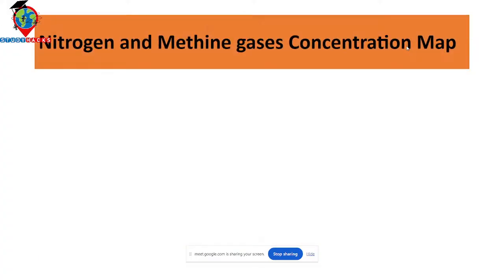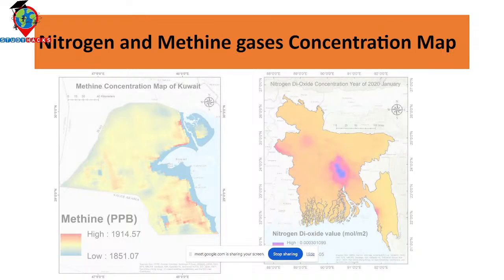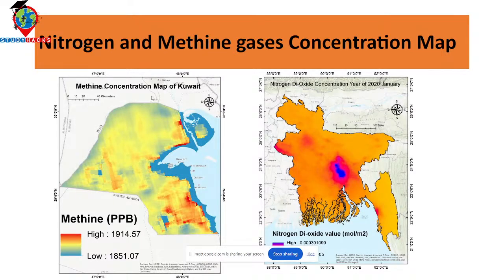Here you can see a concentration map — a nitrogen dioxide and methane gas concentration map. This is the methane concentration map. This dataset was extracted from Sentinel-5 satellite imagery, and you can see the unit is PPB (parts per billion).